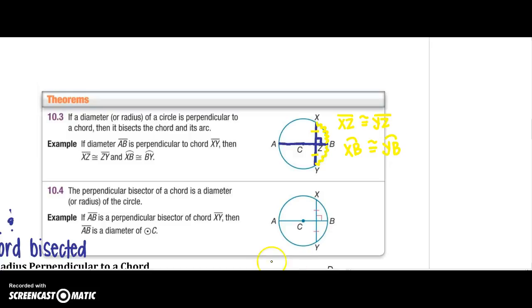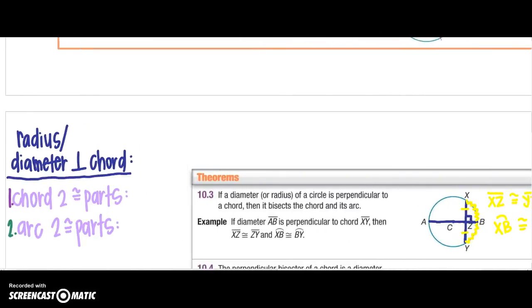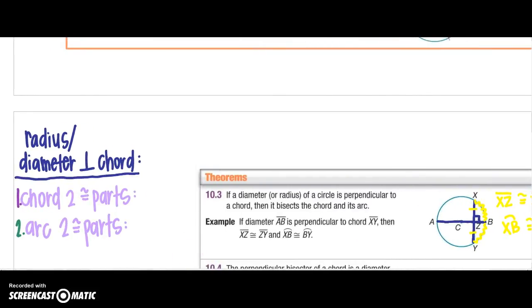All right, so here's a couple things of information that we can remember from that. So if a radius or the diameter, so I could have just said diameter CB, is perpendicular to a chord, we know that the chord becomes two congruent parts, and we know the arc becomes two congruent parts. So we can say again, XZ is congruent to YZ. Those are our chords split in half, and our arcs are also cut in half as well.